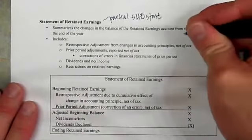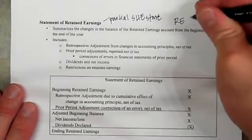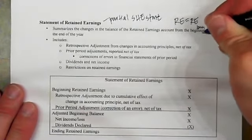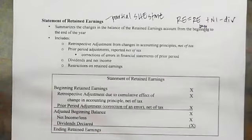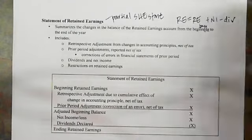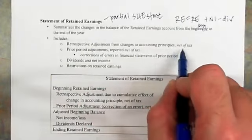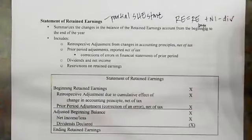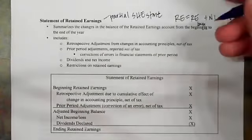The retained earnings equation begins as: retained earnings equals beginning retained earnings, plus net income, less dividends. Now we're going to add two more things. One is a retrospective adjustment from changes in accounting principles, net of tax, which we'll cover in the next lecture.